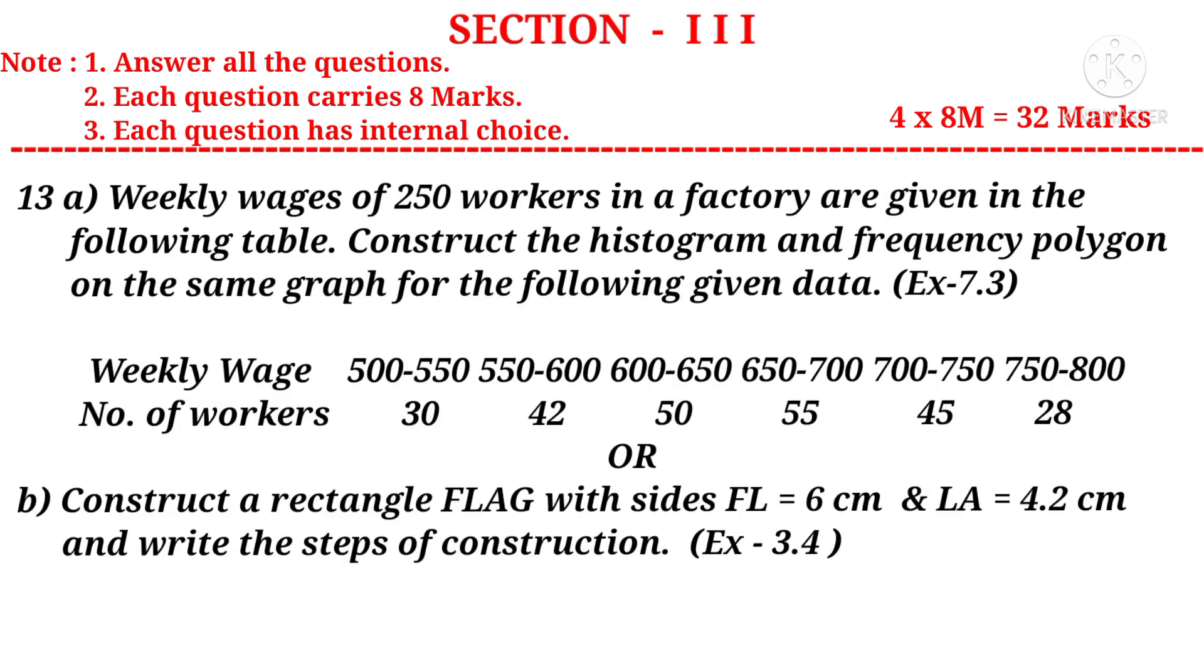Question 13(a): Weekly wages of 250 workers in a factory are given in the following table. Construct the histogram and frequency polygon on the same graph for the following given data. It is a question from the 7th chapter. Or (b), construct a rectangle FLAG with sides FL = 6 cm and LEA = 4.2 cm, and write the steps of construction. It is a question from the 3rd chapter.